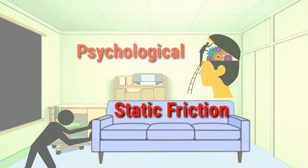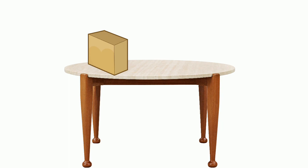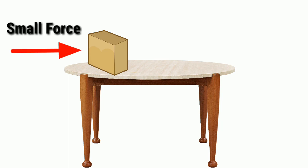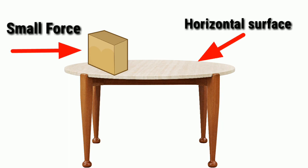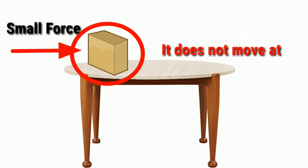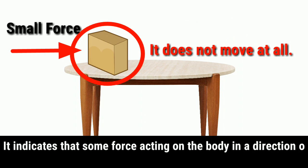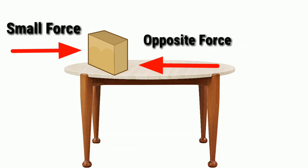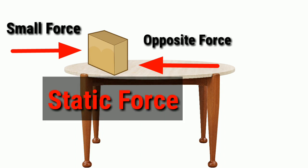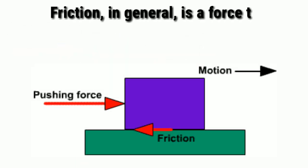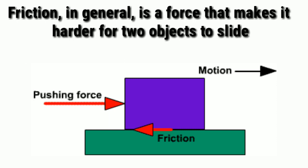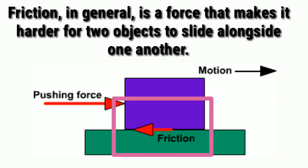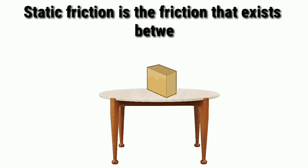The reason is static friction. Sometimes when a small force is applied on a body lying on a horizontal surface, it does not move at all. This indicates that some force is acting on the body in a direction opposite to the applied force. Such an opposing force is called static friction. In general, friction is a force that makes it harder for two objects to slide alongside one another.